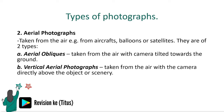We have the aerial photographs, as mentioned earlier, which are taken from the air. There are two types: the aerial oblique, which are taken from the air with the camera tilted towards the ground, and the vertical aerial photographs, which are taken from the air with the camera directly above the object or scenery.